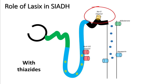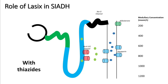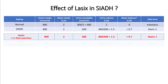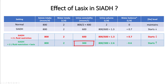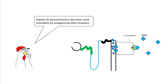Thiazides act on the sodium-chloride channel in the renal cortex. Blocking these channels similarly increases aquaporin channels in the distal convoluted tubules, but the medullary gradient remains high, so more free water is absorbed — which can cause hyponatremia. By contrast, giving Lasix to an SIADH patient on 2 liter fluid restriction drops urine osmolality to about 300, increases urine volume to 2.6 liters, and creates a net negative water balance, improving sodium.